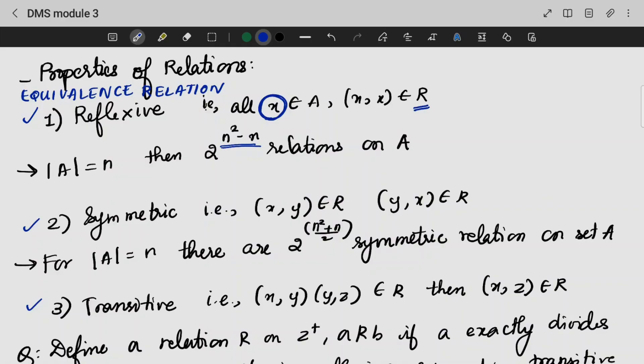Symmetric. If I have (x,y), if (x,y) is in R, then (y,x) should also be in R. It should be symmetric.